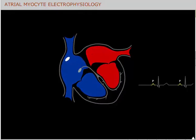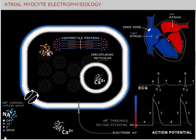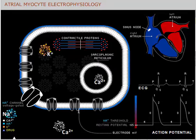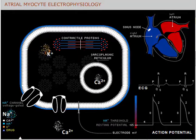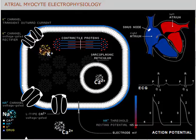The depolarizing impulse generated by the sinus node, the pacemaker of the heart, propagates first to the adjacent atrial myocyte cells, resulting in the P wave on the electrocardiogram.